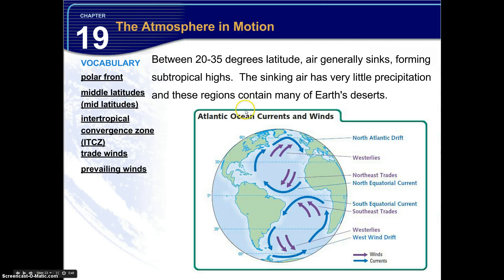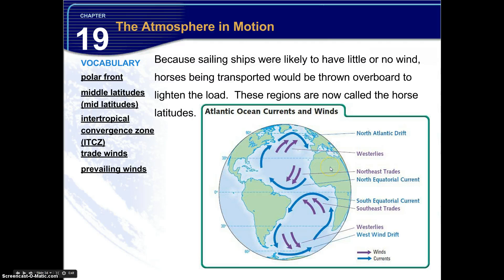Now between 20 and 35 degrees latitude, air generally sinks, forming subtropical highs. This sinking air has very little precipitation, and these regions contain many of earth's deserts. So if you look around the planet, and you look around that 30 degree mark, latitude north and south, you'll notice that many of earth's deserts lie within that region. Now because sailing ships were likely to have little or no wind, horses being transported would be thrown overboard to lighten the load. That's how they get the name, the horse latitudes.